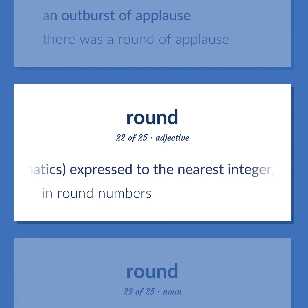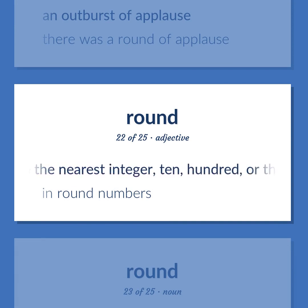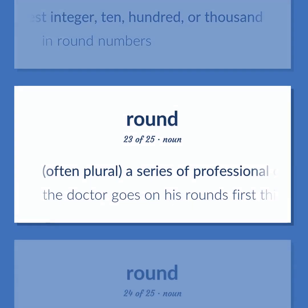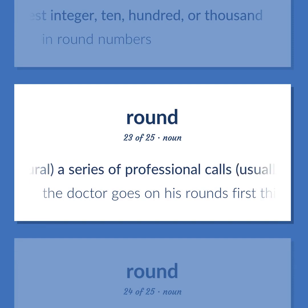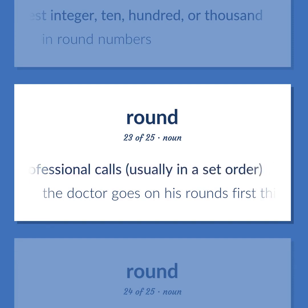Mathematics: expressed to the nearest integer — ten, hundred, or thousand. Example: In round numbers. Often plural: a series of professional calls, usually in a set order. Example: The doctor goes on his rounds first thing every morning.